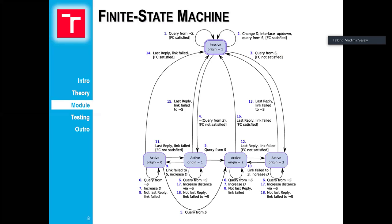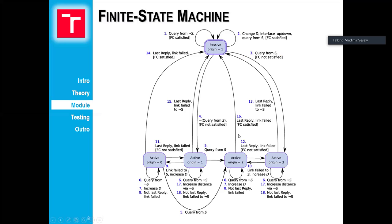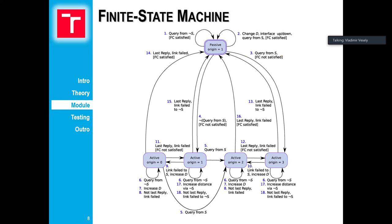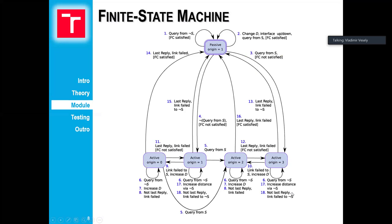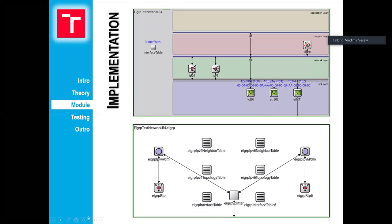The functionality of EIGRP can be described using a finite state machine. Comparing to other routing protocols, the finite state machine describing EIGRP has something like 18 transitions — so it is not that hard, but also not that easy. We were able to implement this finite state machine, which is also partially described in the RFC.